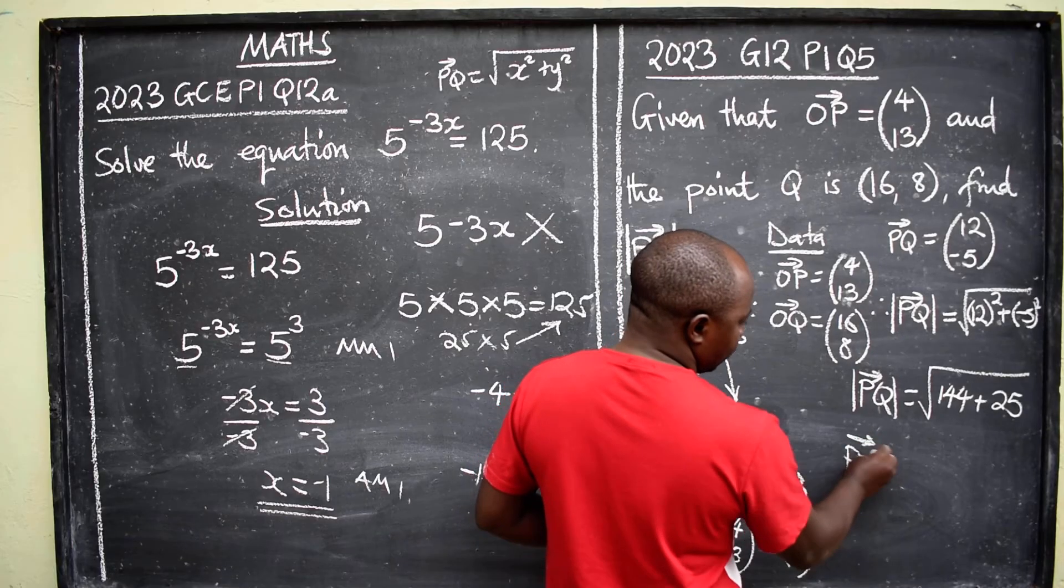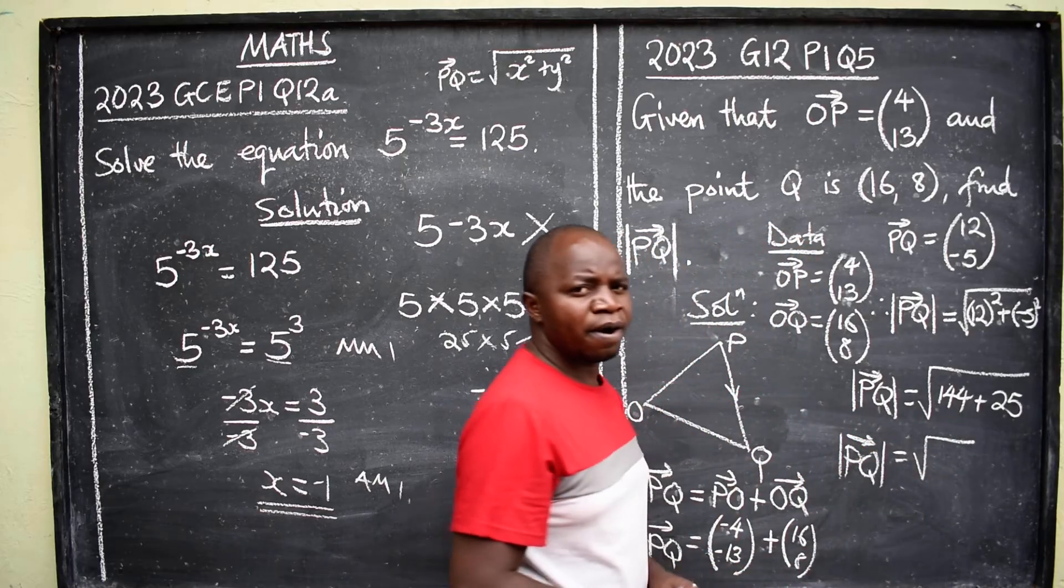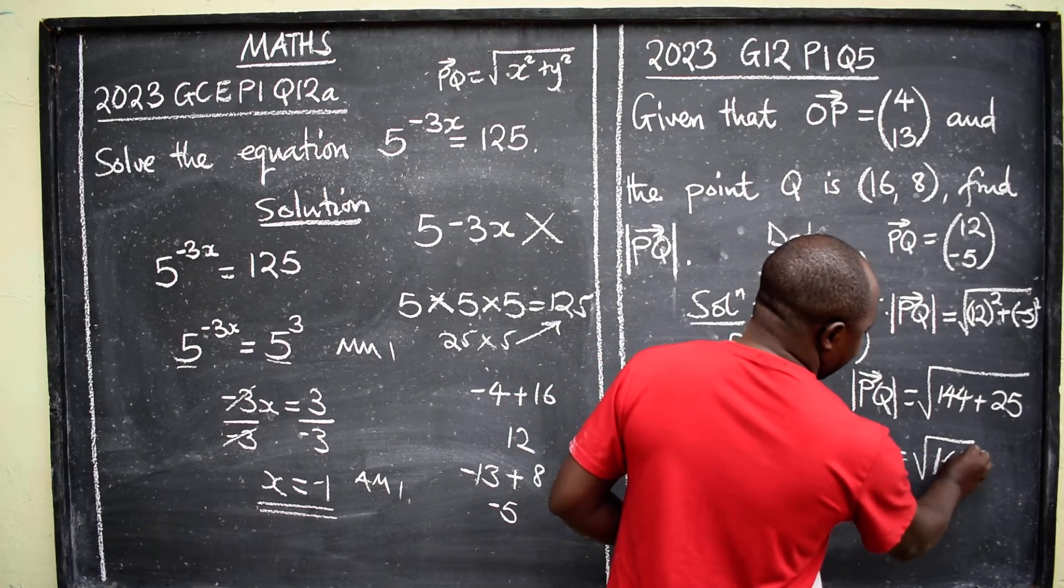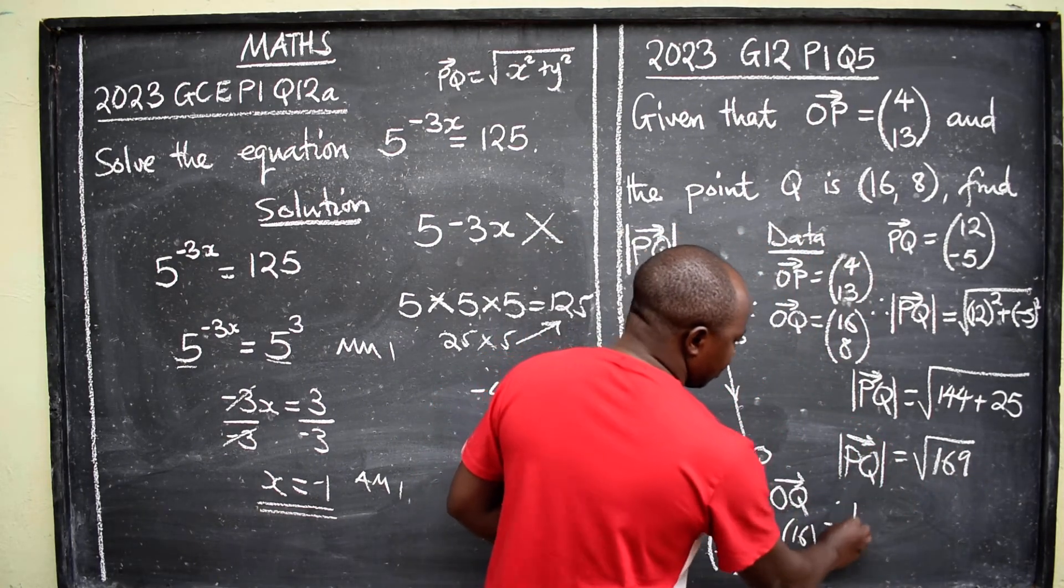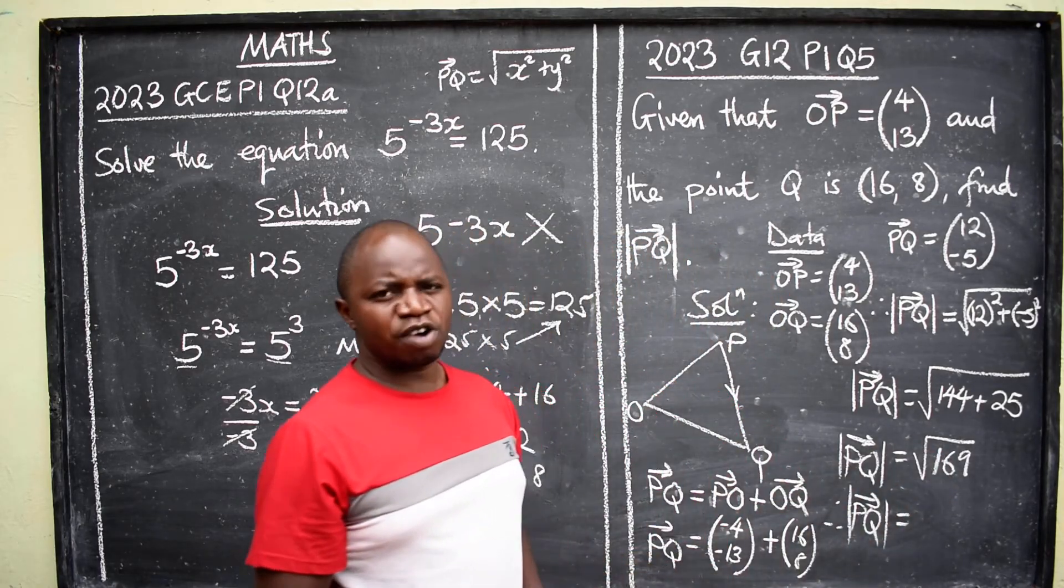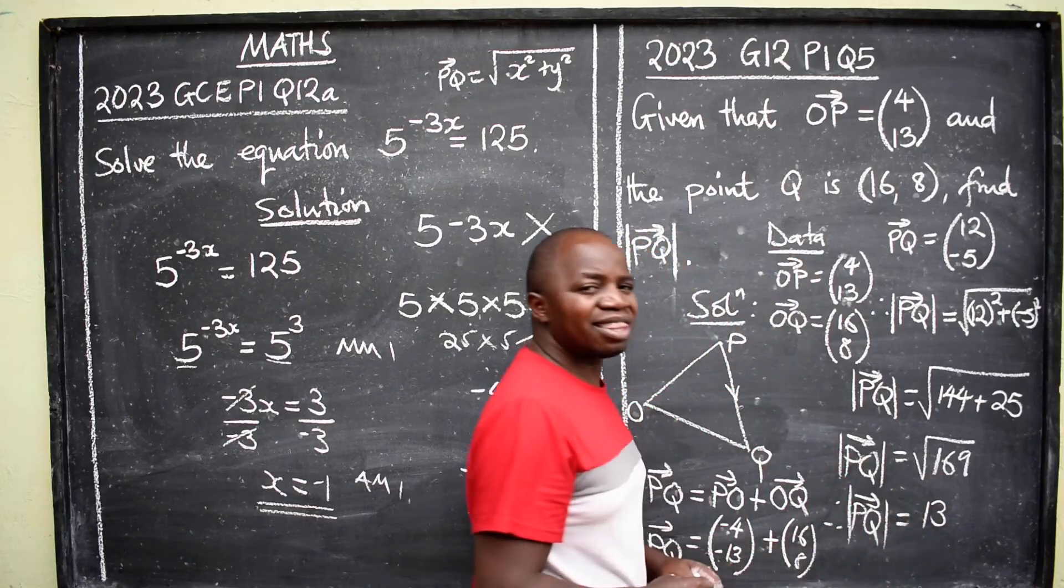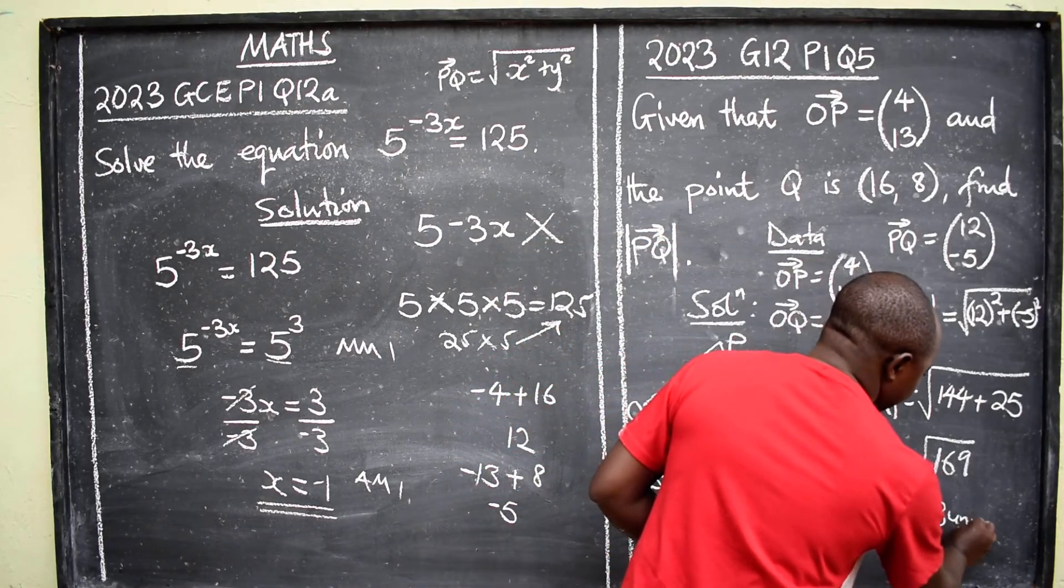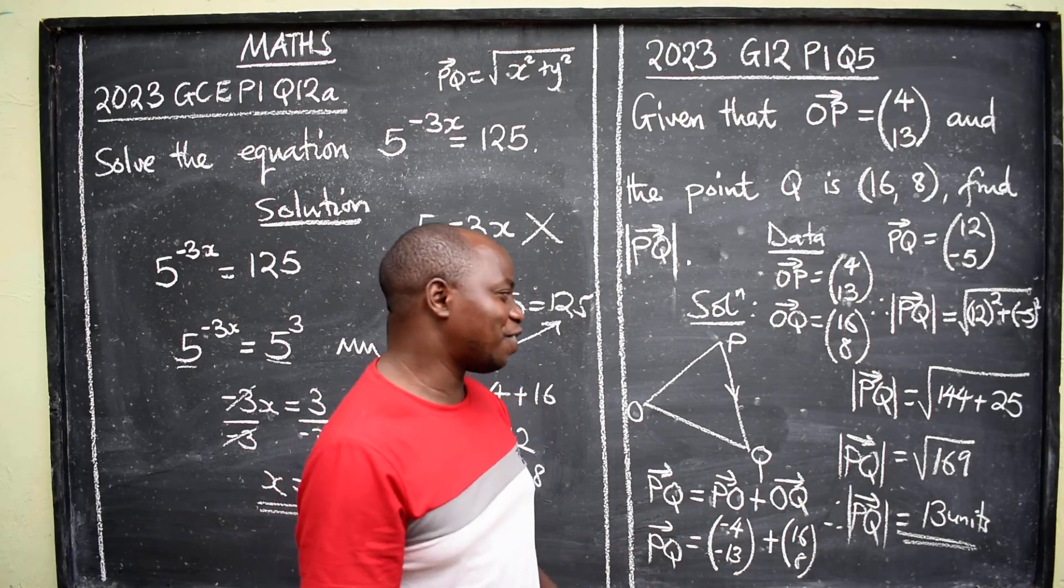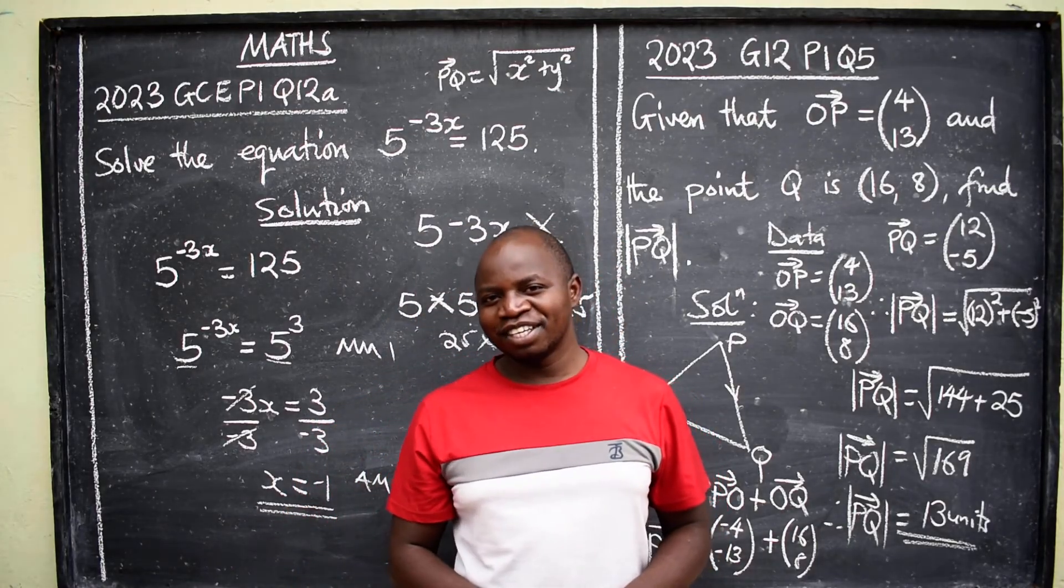So PQ magnitude will be equal to square root of 144 plus 25, which will give us 169. And our final answer will now be magnitude square root of 169, you get the positive number. This will be 13. So you are going to say 13 units like this. That is now our final answer for this question.